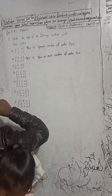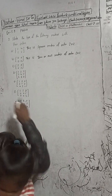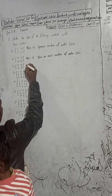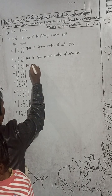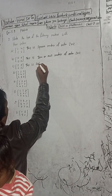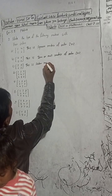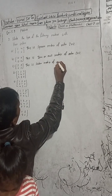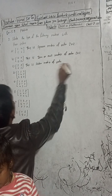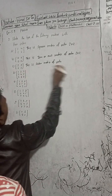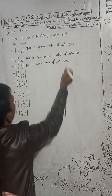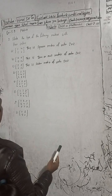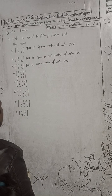The next one has elements 2, 0, 0, 2. This is called a scalar matrix. This is a scalar matrix of order 2×2.